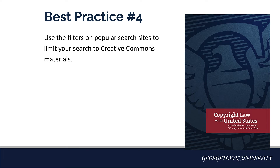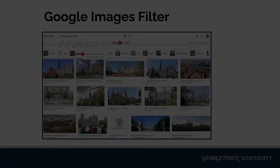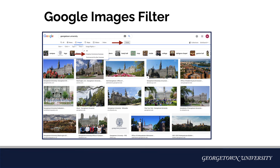Use the filters on popular search sites such as Google Images or YouTube to limit your search to Creative Commons materials. For a Google Images search, first click on Tools, and then under Usage Rights, choose Creative Commons licenses. If you find a suitable image, be sure to verify that the license applies to your project.